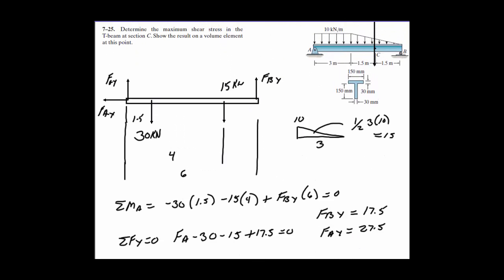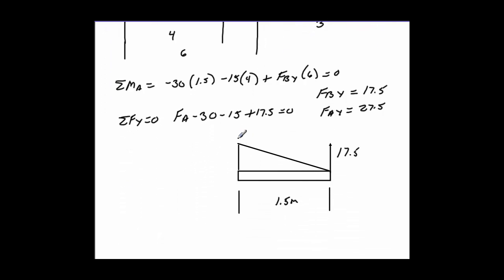The only thing to be careful with is finding the load intensity at C. It's 10 at the start and going slowly down. To find the value here: take 10, divide by 3, then multiply by 1.5 — that gives us 5 at this point.